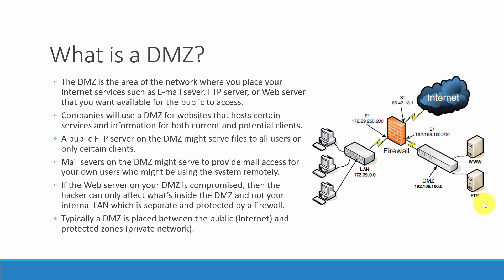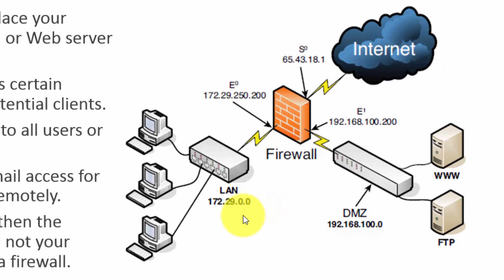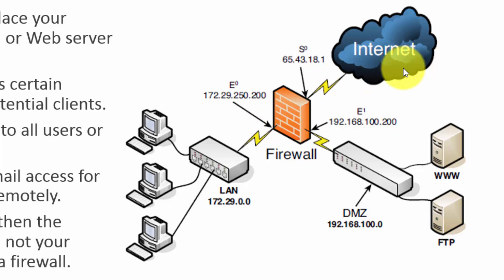Let's take a look at the image on the right. You have your local area network at the IP address 172.29.0.0, and then you have your firewall that's protecting you from the internet, the untrusted network. And then here you have the DMZ that's residing away from the local area network.